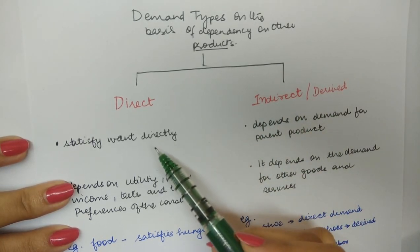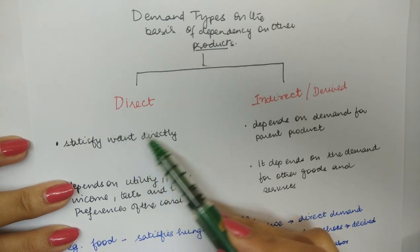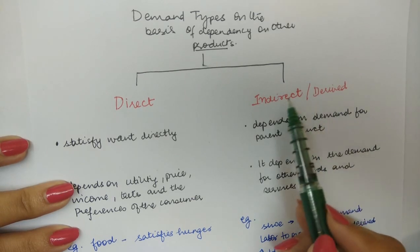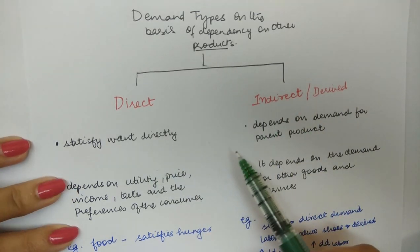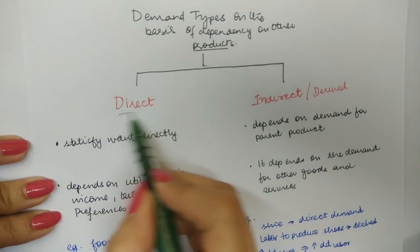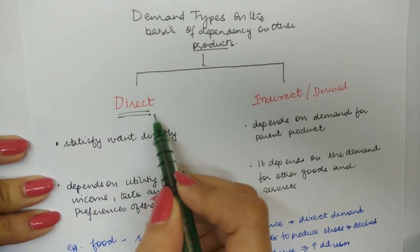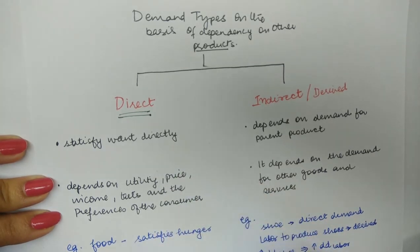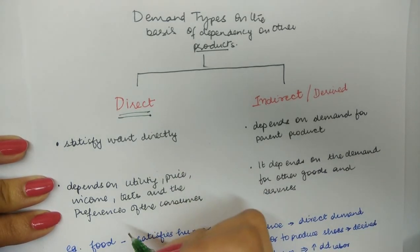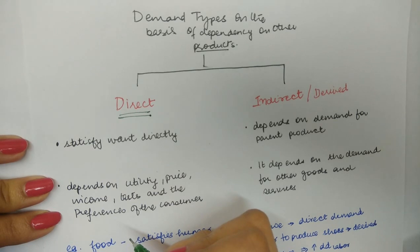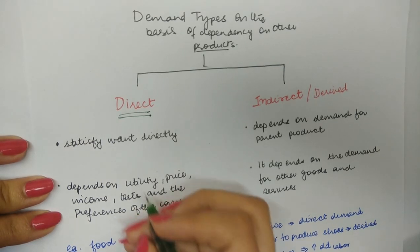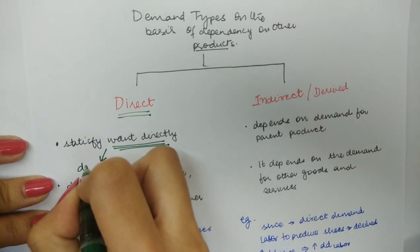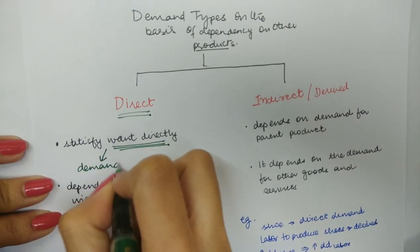The classification of demand into direct and indirect is based on dependency on another good. Direct demand is when the demand for a product is not associated with the demand for another product — that is, the demand for a commodity is direct when it satisfies your wants directly and does not depend on the demand for another good.